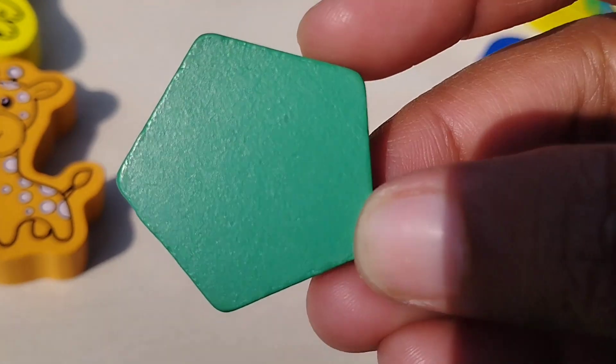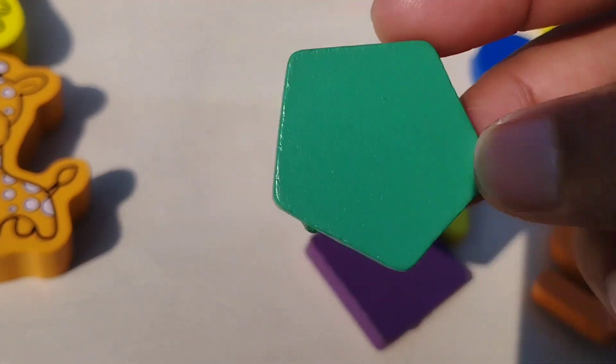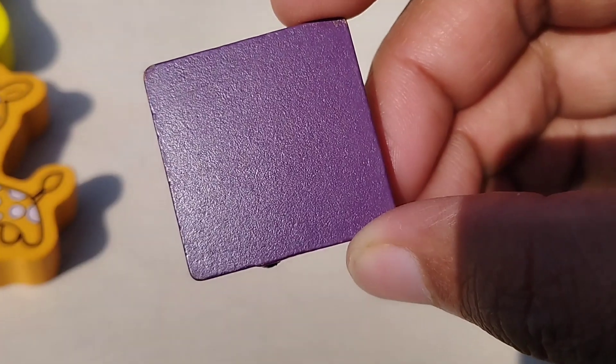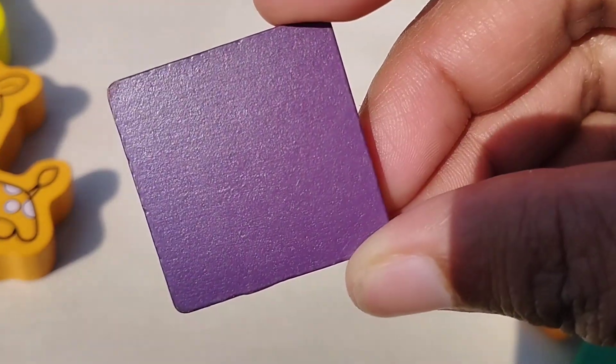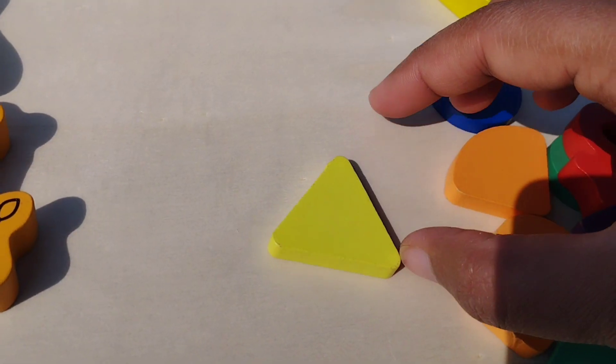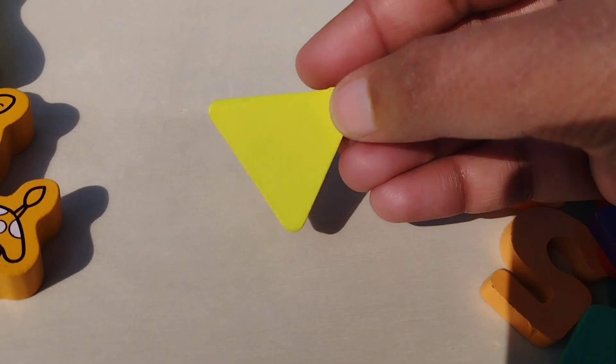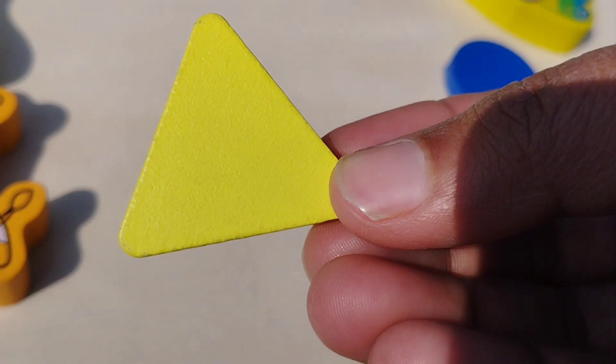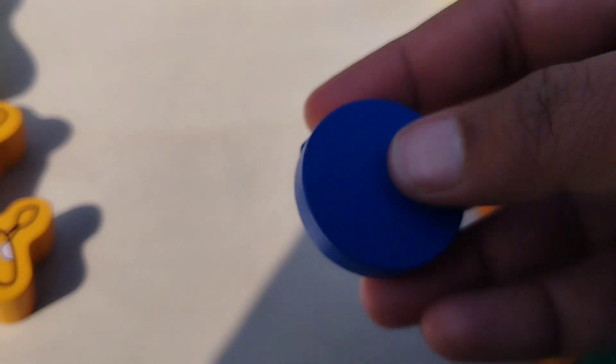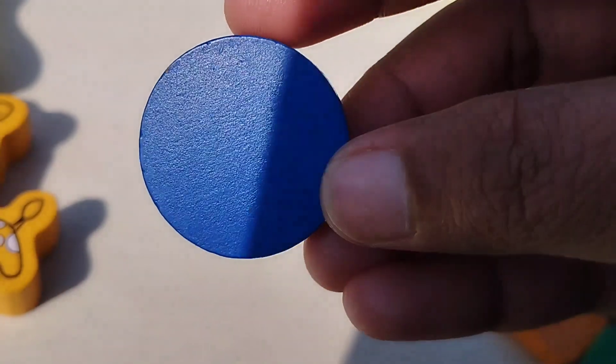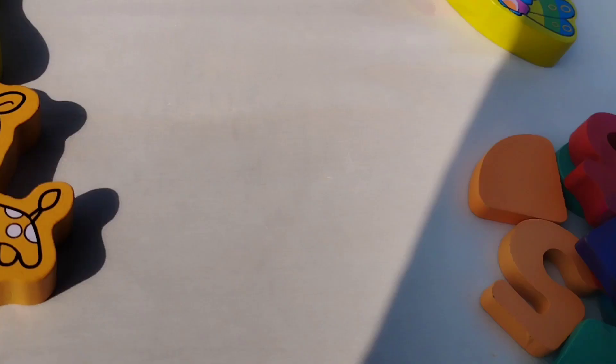Pentagon. This is pentagon. The next shape is square. This is square shape. Triangle. This is triangle shape. The next shape is circle.